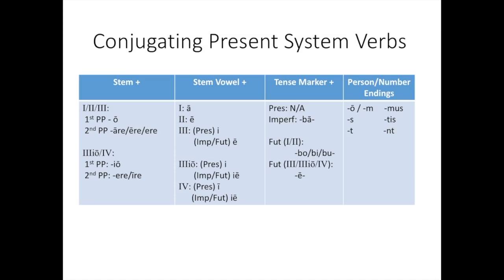The stem vowel will be an I or an IE in the third, third IO, or fourth conjugation. The only difference between the third and third IO is that in the imperfect and future, there's an I for third IO, but in the third conjugation, it's just the long E.